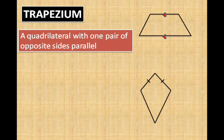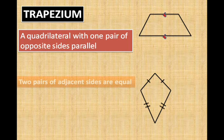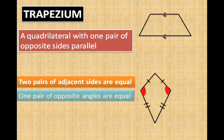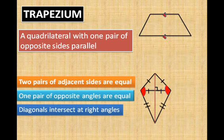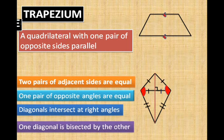Now look at this quadrilateral. One pair of adjacent sides are equal, and even the second pair — so two pairs of adjacent sides are equal. One pair of opposite angles are also equal. The diagonals intersect at right angles, and one diagonal is bisected. Such a quadrilateral is called a kite.